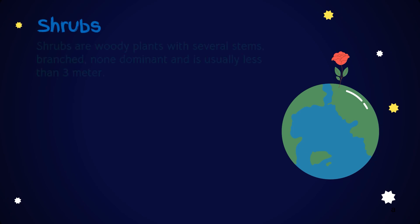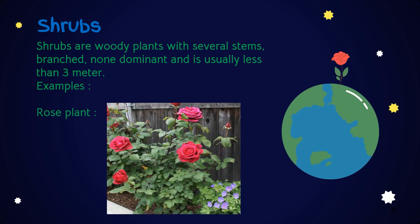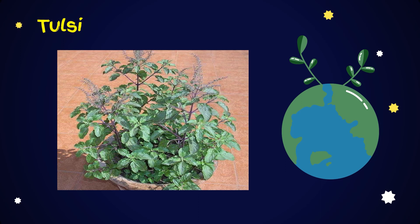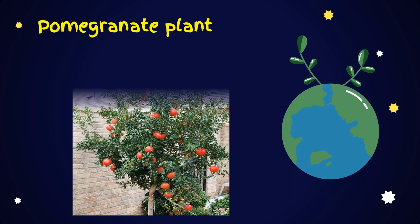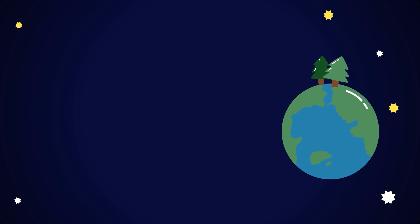Shrubs are woody plants with several stems. These are branched, non-dominant and usually less than 3 meters in height. For examples: rose plants, tulsi, pomegranate and jasmine plant.